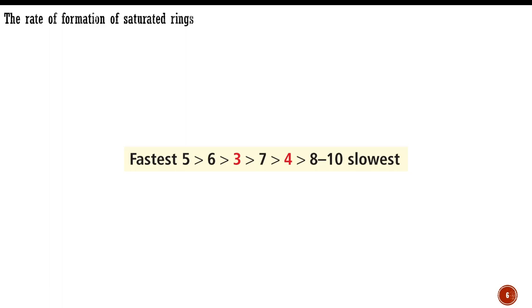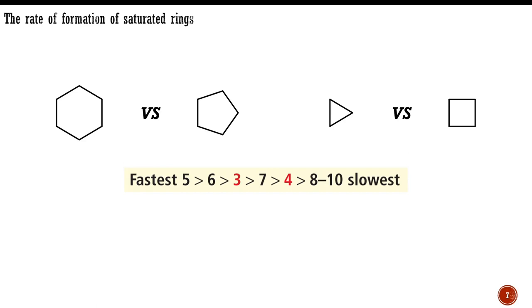This explains why 3- and 4-membered rings do not fit straightforwardly into the sequence. But if the reaction rate simply depended on the strain of the product, the slowest reaction would be the formation of the 3-membered ring, and 6-membered rings, which are essentially strain-free, would form fastest. Yet the data shows that 4-membered rings form more slowly than 3-membered ones, and 5-membered rings faster than 6-membered.